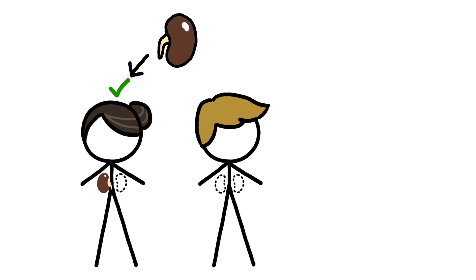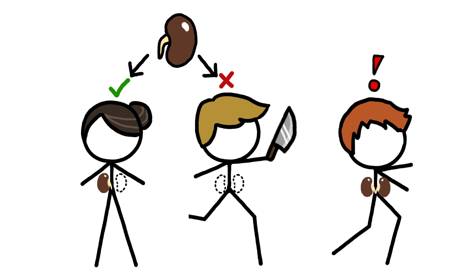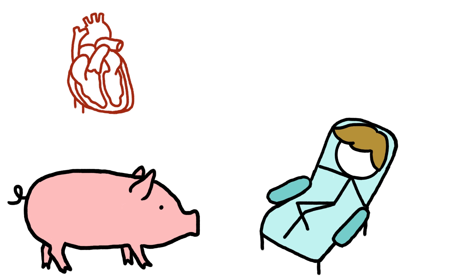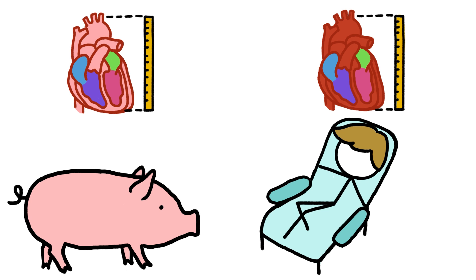There simply aren't enough donated human organs to go around, and we can't just go around stealing them out of random healthy people. But pigs' organs have roughly the same structure and proportions as human organs, and we already kill half a billion of the creatures every year for food.